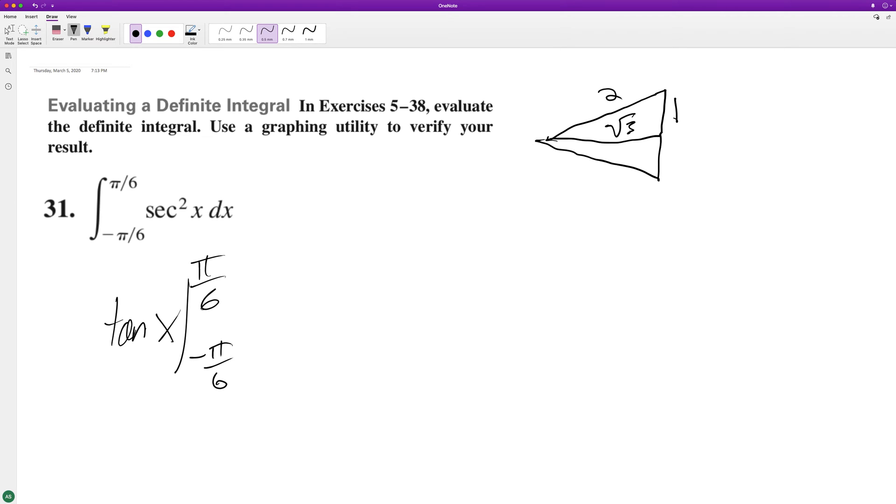For tangent of pi over six, it's going to be tangent of pi over six, which is going to be one over root three, opposite over adjacent, minus this is negative one, negative one over root three.